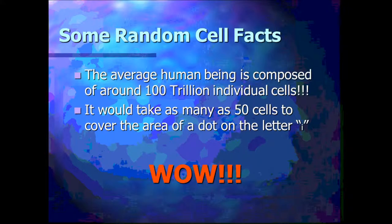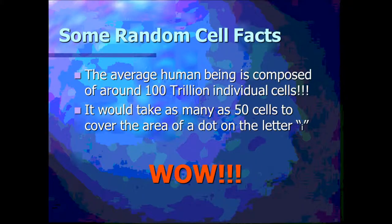Here are some random facts about cells. The average human being is composed of around 100 trillion individual cells. If you think about the size of a human being and know that they have about 100 trillion individual cells, this should tell you that cells are really, really small. Also, it would take as many as 50 cells to cover the area of a dot on the letter I — that little dot at the top — which confirms that cells are very small.